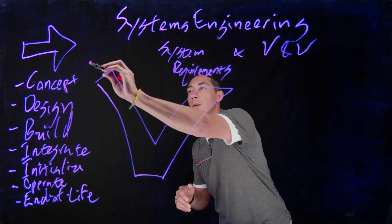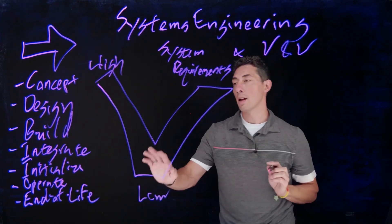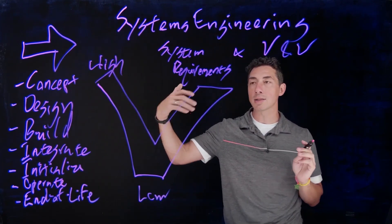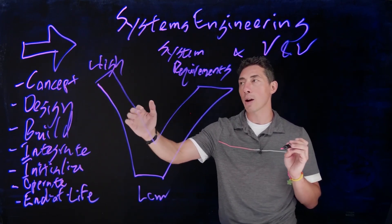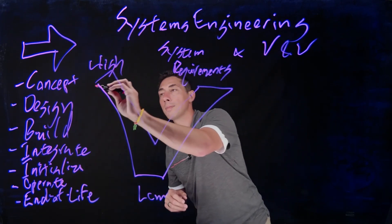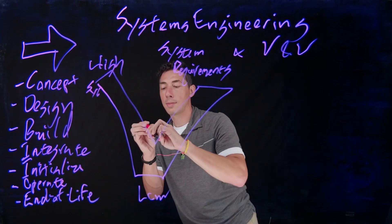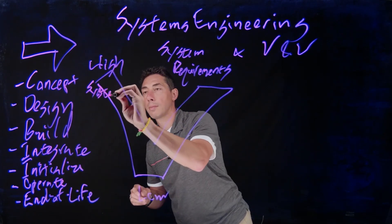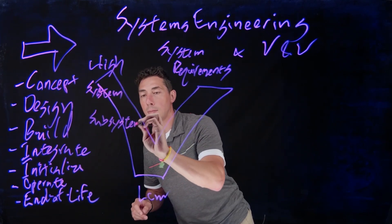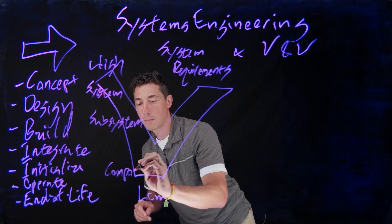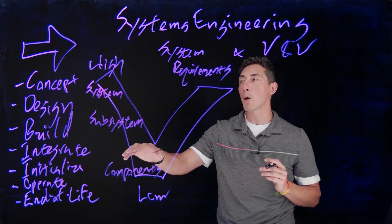So the idea with the system V, you've got high and low levels of detail. And your high level details, that's going to be your initial concept. And as you drill down, you're going to have your system, your subsystem, and your components.